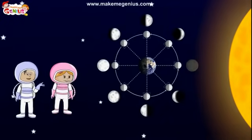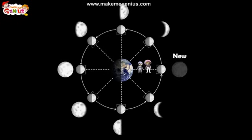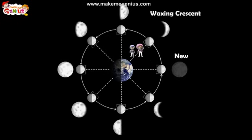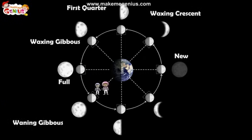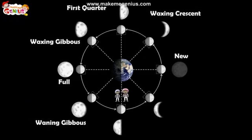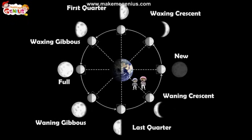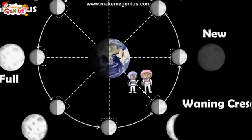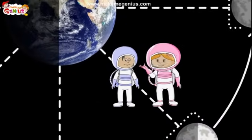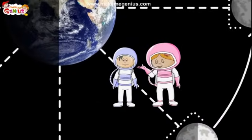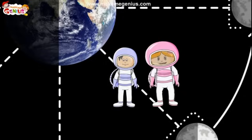What are the names of these phases? They are: new moon, waxing crescent, first quarter, waxing gibbous, full moon, waning gibbous, last quarter, and waning crescent. I am confused — can you repeat it? Why not? Let us have a look again and understand it.